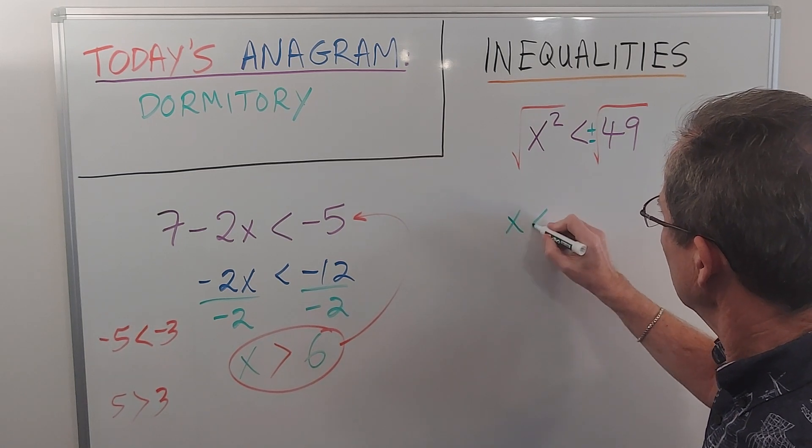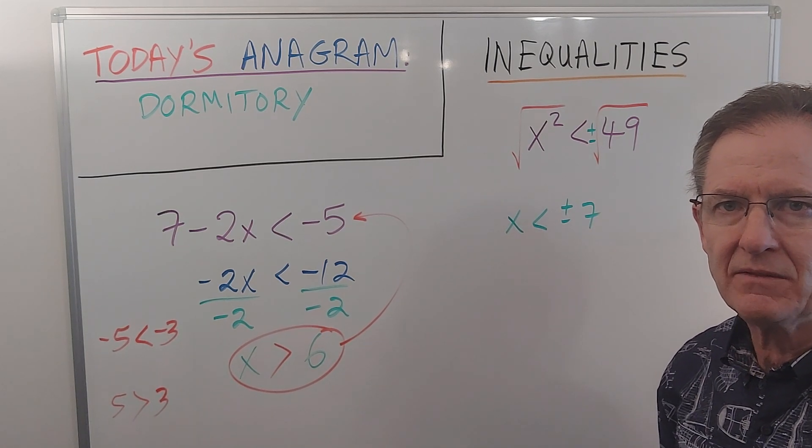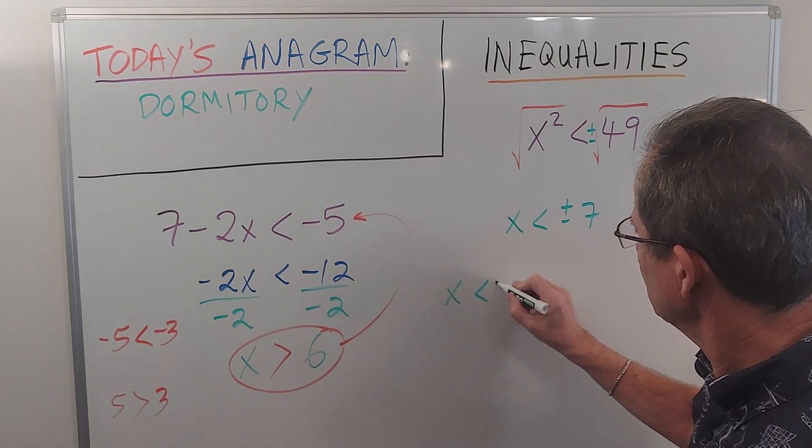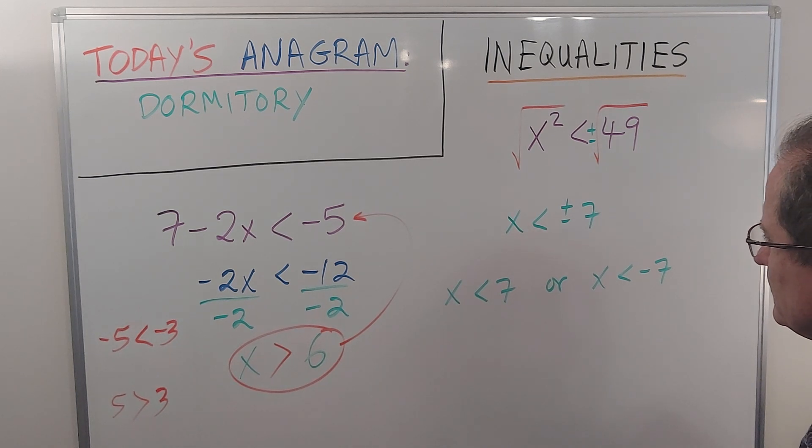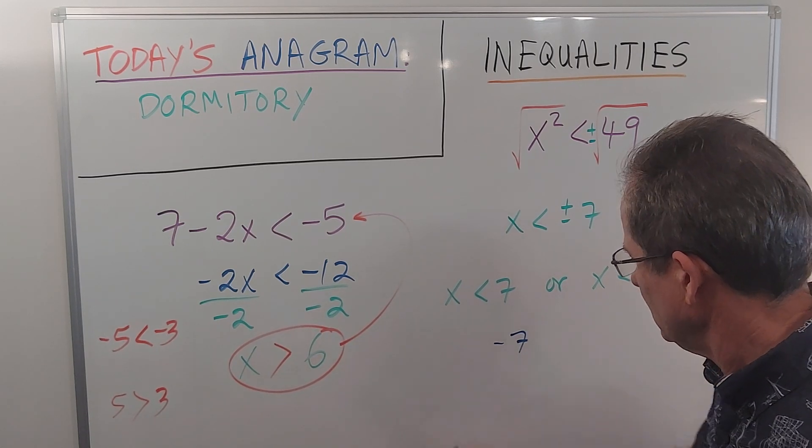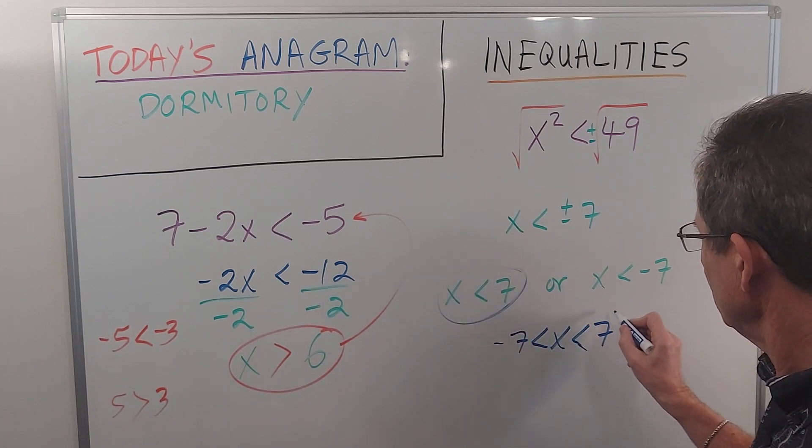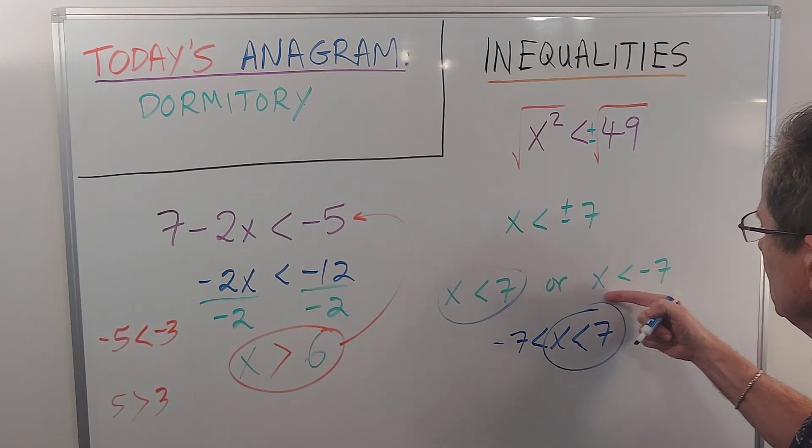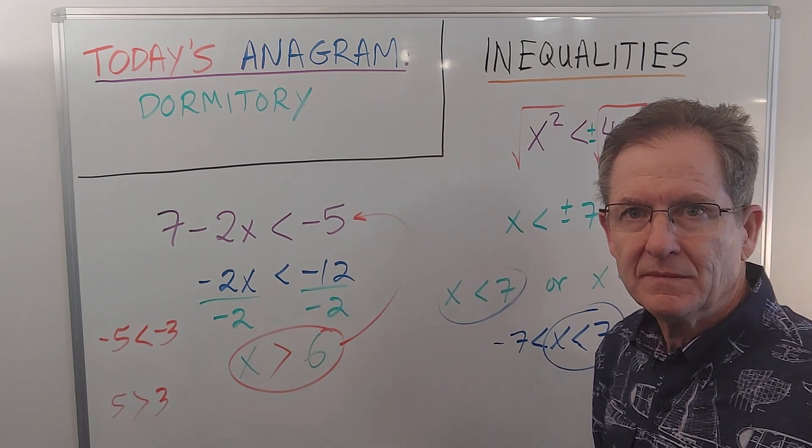Then I get x less than plus or minus 7. Is that what I had a minute ago when I said negative 7 is less than x which is less than 7? No, it's not. Because this could be broken down into two answers: x is less than 7, or x is less than negative 7. And the answer, you remember, was negative 7 less than x, which is less than positive 7. So do I have... oh yeah, I have this part, that part's here, but this part is wrong because that inequality is backwards. If I read this that way, it says negative 7 is bigger than x. This says negative 7 is less than x.